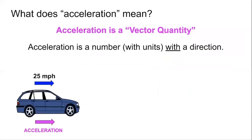Acceleration is also, like velocity, a vector quantity. It has a scale — a number with units — but it also has a direction. So what does direction for acceleration mean? The direction of acceleration is not necessarily the same as the direction of motion. Velocity is defined as the rate at which your position is changing, so its direction tells you whether you're moving forward or backward. Acceleration is a measure of the change in an object's velocity — it measures change. So the direction of acceleration is the direction of that change.